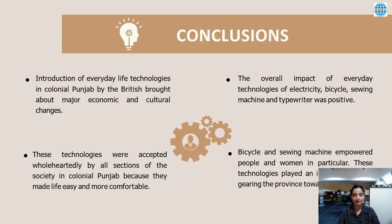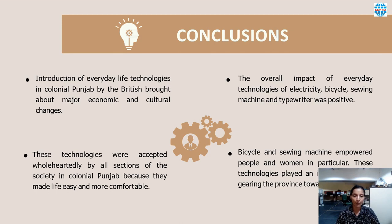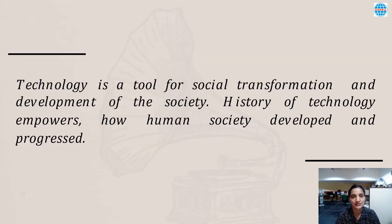In conclusion, the overall impact of everyday technologies of electricity, bicycle, sewing machine and typewriter was very positive, and these were accepted wholeheartedly in colonial Punjab by all sections of society because they made life easy and comfortable. The bicycle and sewing machine also empowered people, and women in particular, as they found these everyday machines very useful in generating income from the confinements of their home. All these everyday technologies played an important role in gearing the province towards modernity, and this aspect should be regarded as a positive outcome of colonial Punjab. Technology is a tool for social transformation and development of society, and the history of technology empowers how human society developed and progressed. Thank you.